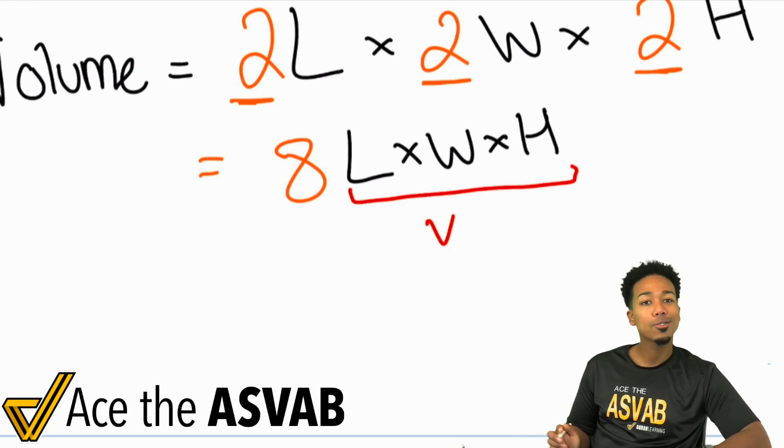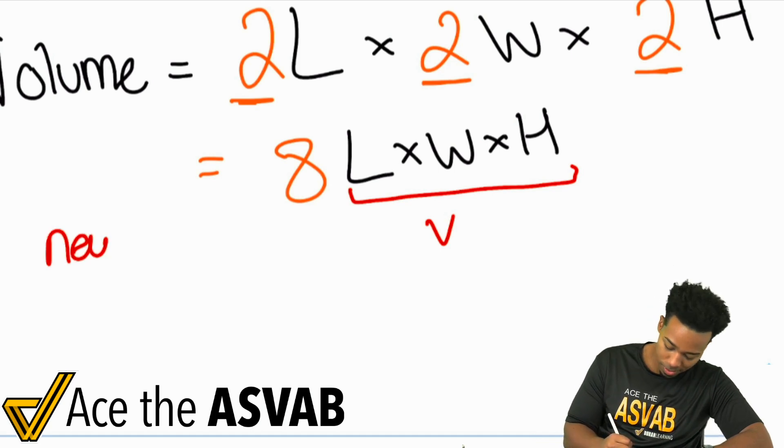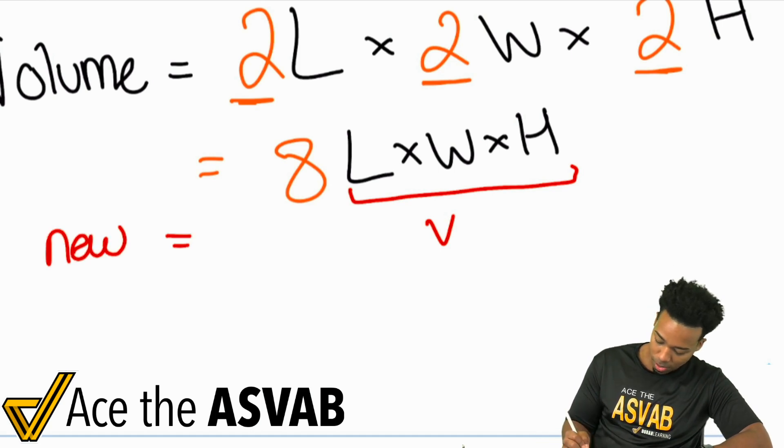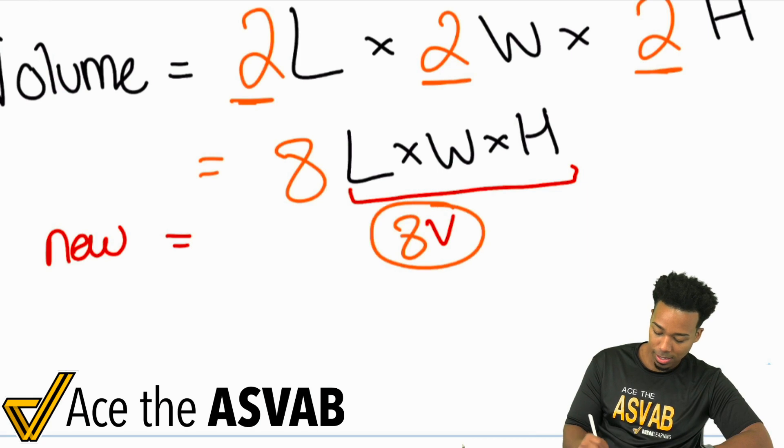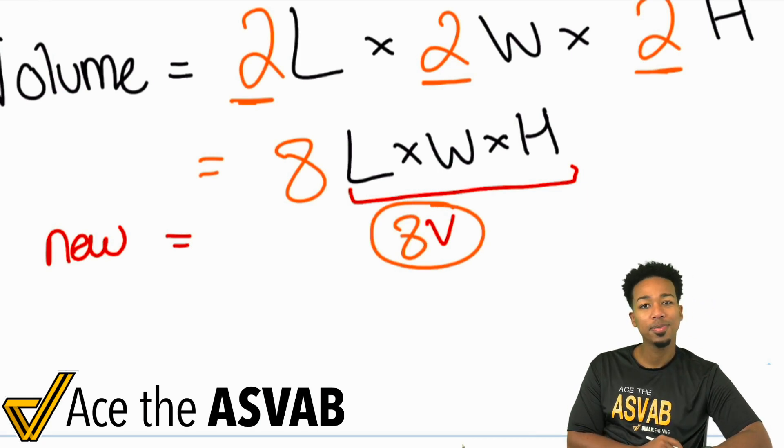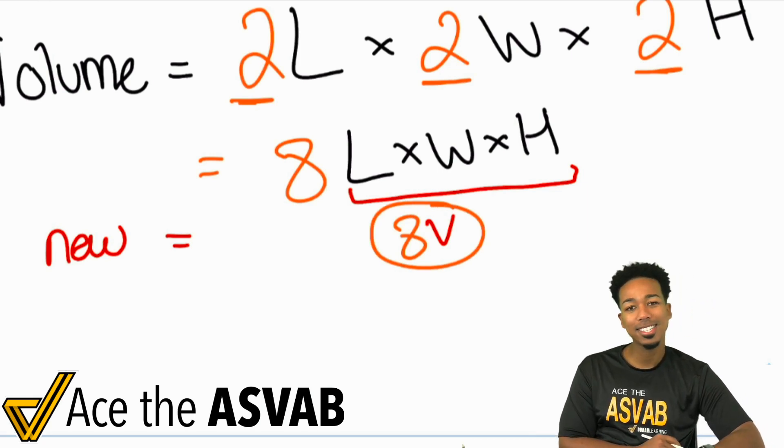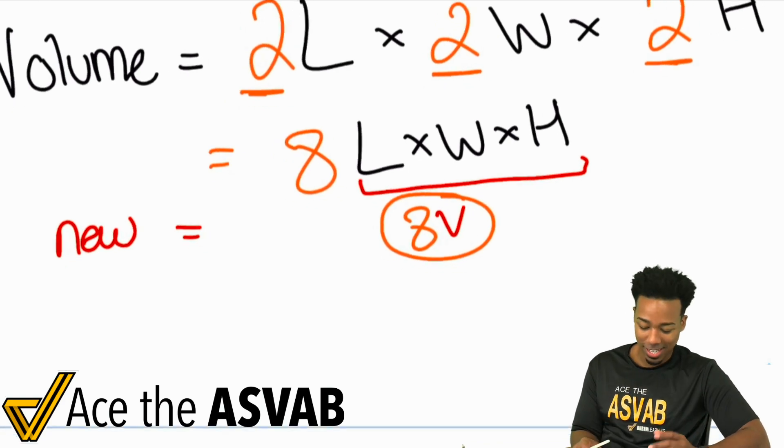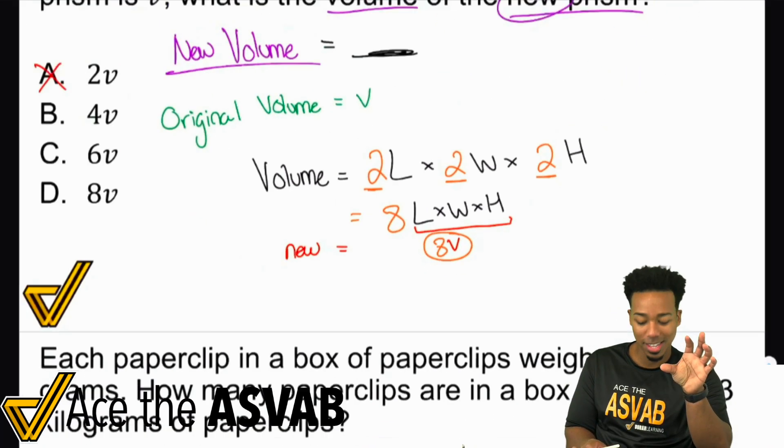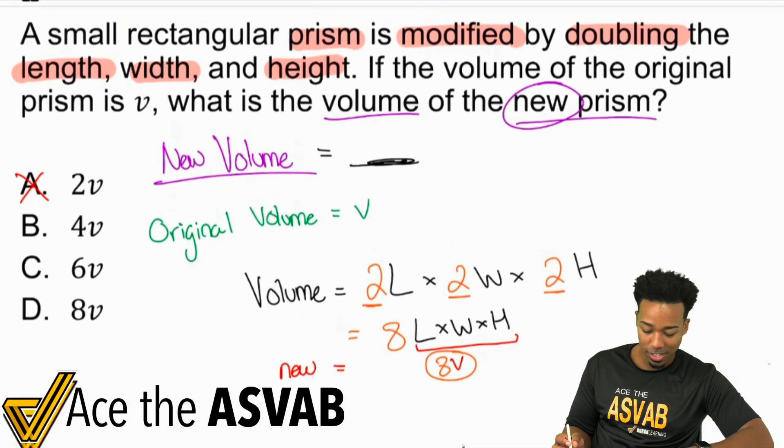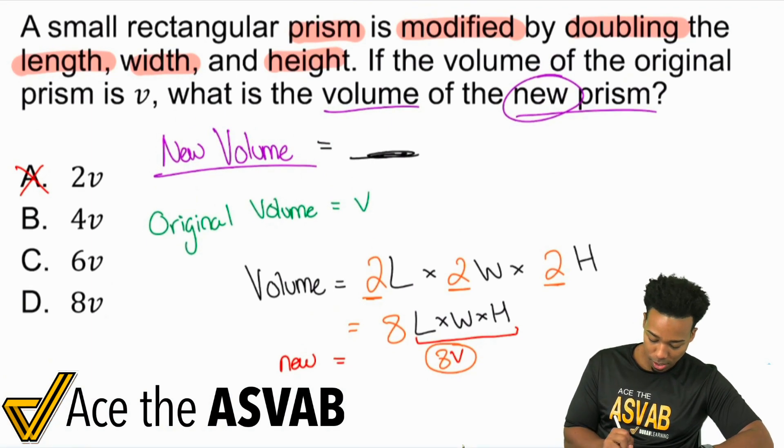And so then you have eight length times width times height. But remember, my party people, this right here, that's the volume. Length times width times height, right? So the new volume is going to be eight times that old volume. And look at that. And why does that make sense? Because again, the answer is 8V. But let me go ahead and show you a different way to think about it in case that didn't make all the sense in the world.